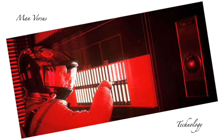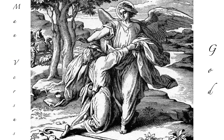Man versus machine — illustrated here with HAL 9000 singing 'Daisy, Daisy, give me your answer do, I'm half crazy, all for the love of you.' And man versus the gods, or fate, or the supernatural — what have you. Those are the six traditional types of conflict.